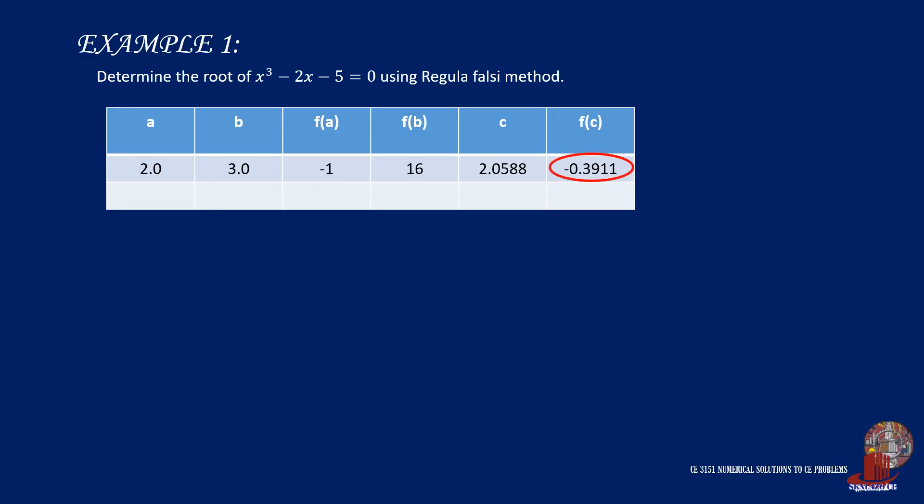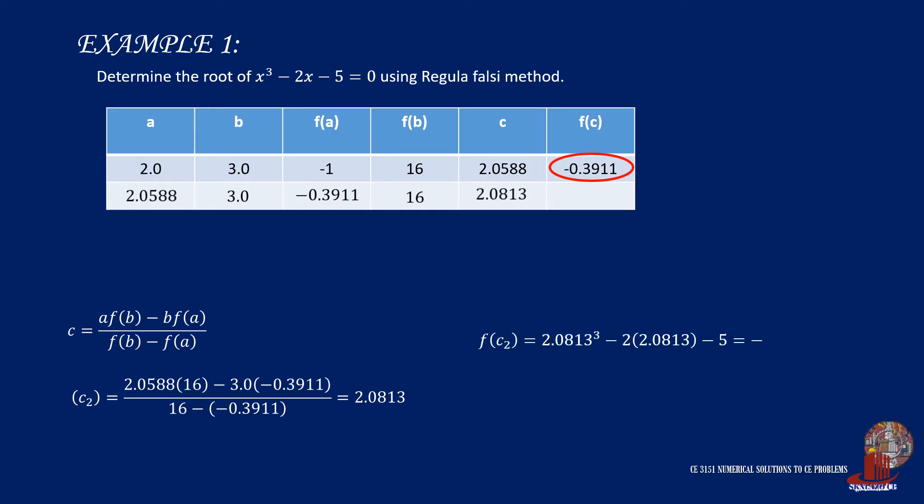The negative value of the function of c in the first iteration would imply that the lower limit would need to be adjusted as the value of the approximate. Thus, a becomes 2.0588, with its function of a as -0.3911. The upper limit b is still the same 3.0, with its function of b as positive 16. Having all the parameters present, look for the next value of c using the formula. That would be computed as positive 2.0813. And the function is then taken as -0.1468.